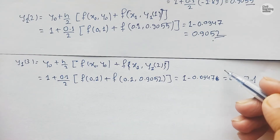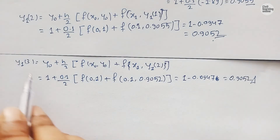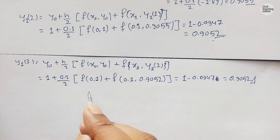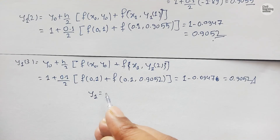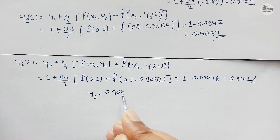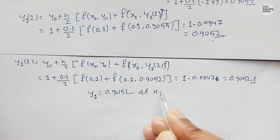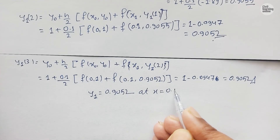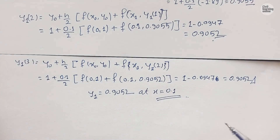Since y1^(2) and y1^(3) both give 0.9052, our final answer is y(0.1) = 0.9052. I hope you enjoyed this lecture. See you in the next video — till then, stay safe, take care, and do not forget to subscribe to Civil Learning Online YouTube channel.